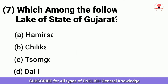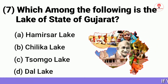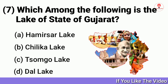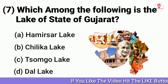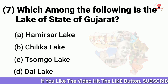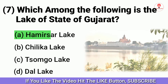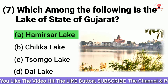Which among the following is the lake of the state of Gujarat? Answer A: Hamirshar Lake.